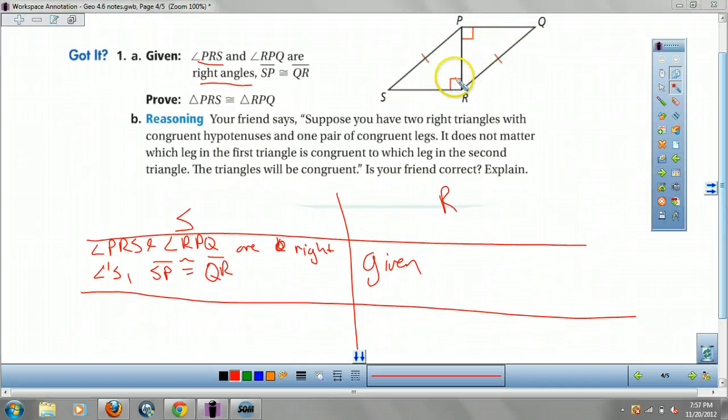So I have my right angle. I have my hypotenuse. They gave me the hypotenuse. Because PS is my hypotenuse. Because it's opposite to the right, and this is also hypotenuse.